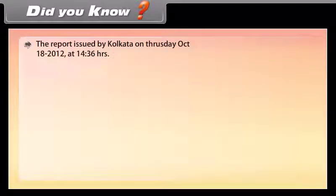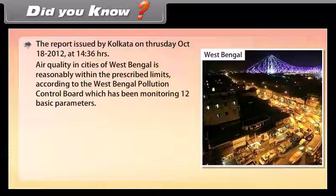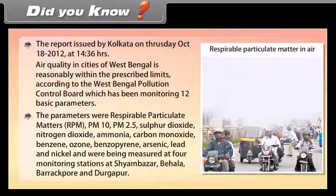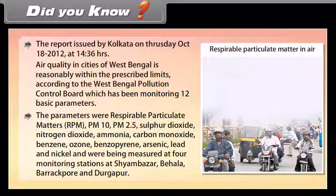Did you know? A report issued by Kolkata on Thursday, October 18, 2012 says air quality in cities of West Bengal is reasonably within prescribed limits according to the West Bengal Pollution Control Board, which has been monitoring 12 basic parameters. The parameters were: respirable particulate matter (RPM), PM10, PM2.5, sulfur dioxide, nitrogen dioxide, ammonia, carbon monoxide, benzene, ozone, benzopyrene, arsenic, lead and nickel — measured at four monitoring stations at Shyam Bazar, Behala, Barrackpore and Durgapur.